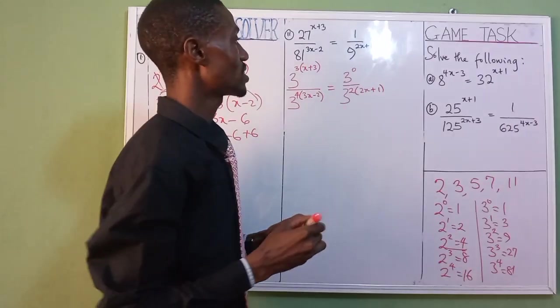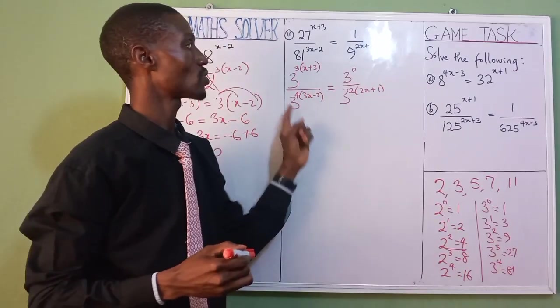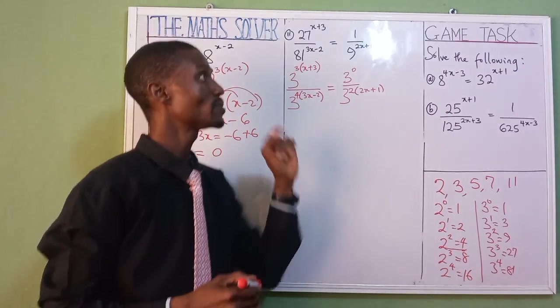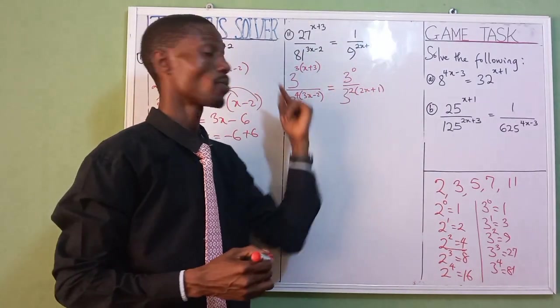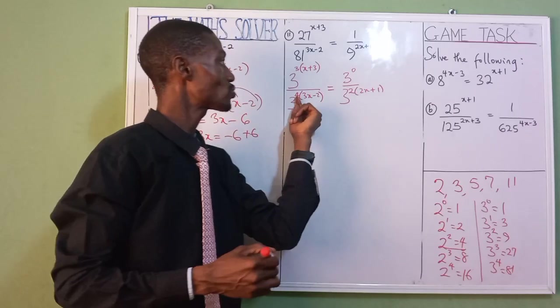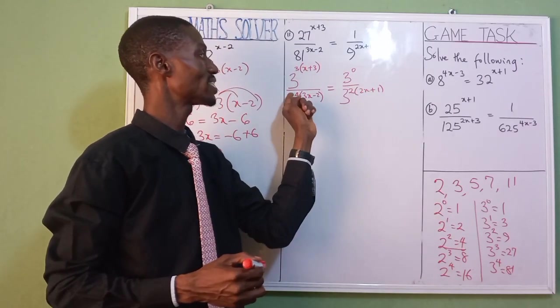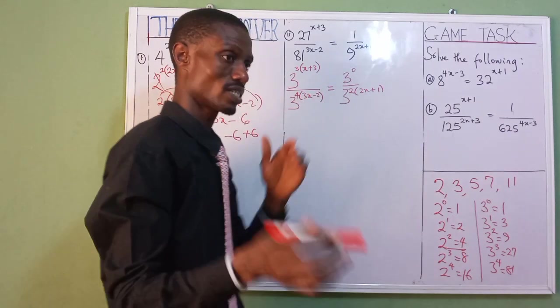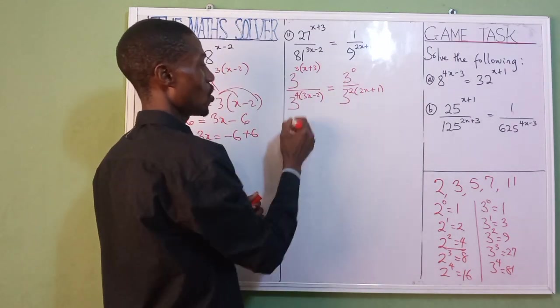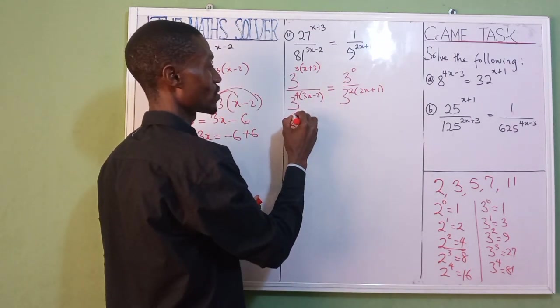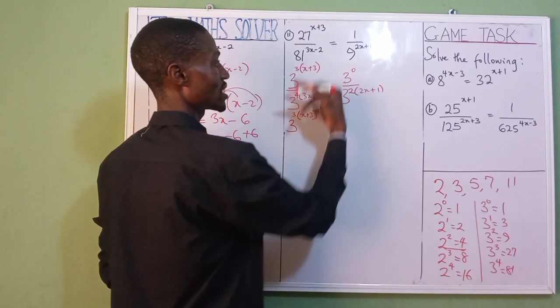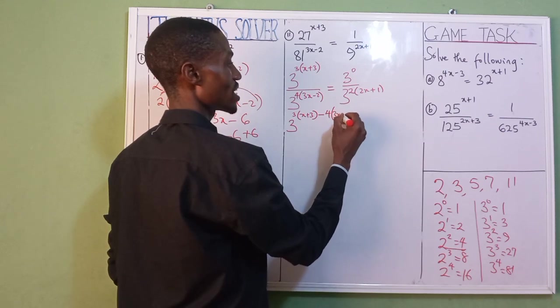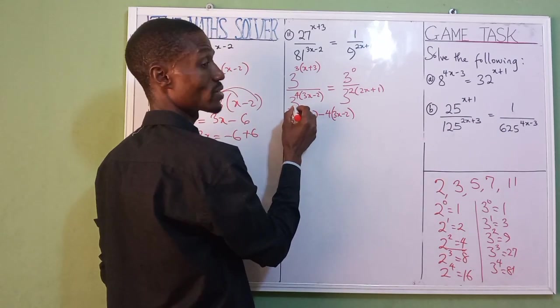Now by the time you get it, as you can see, we have the same base, all 3. The next you are now going to do, because you have a denominator, you now bring your denominator up. And the rule there is that as this one is coming up, you must put negative, that is minus, in front of it. As it's coming up, you put it in front of it. Let's solve it together.